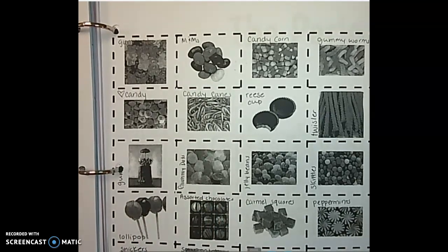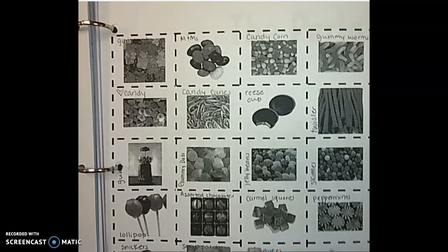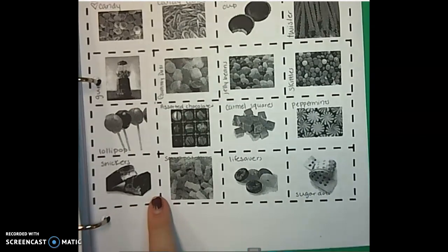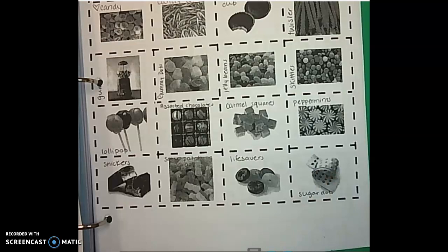Or dots, jelly beans, Skittles, lollipops, assorted chocolates, caramel squares, peppermints, Snickers bars, Sour Patch Kids, Lifesavers, and sugar dots. Those are just little bitty dots of sugar that come on a little paper and you can peel them off and eat them.